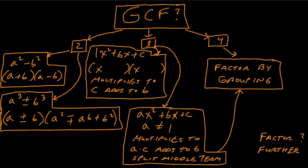Now if you have three terms, you want to ask yourself: is the leading coefficient one, or is it not one? If it's one, it's pretty easy to factor. You just ask yourself what two numbers multiply to the c value, but also simultaneously add to the b value. When you figure out what those two numbers are, they go right here, keeping in mind that if it's negative, it's a minus something; if positive, a plus something. We'll do some examples — but this is basically a review.